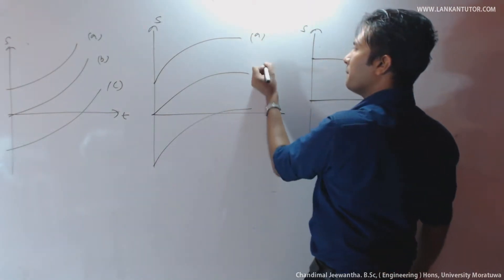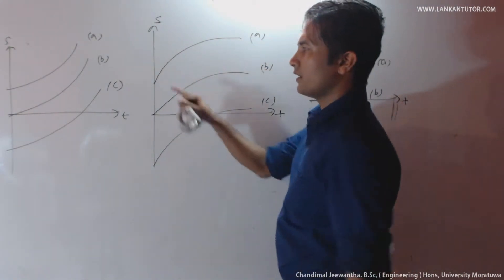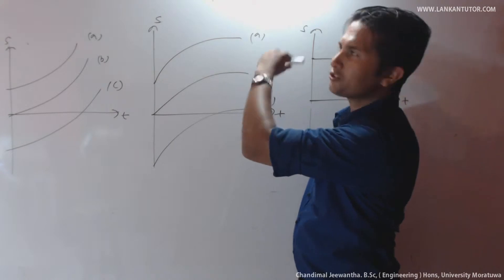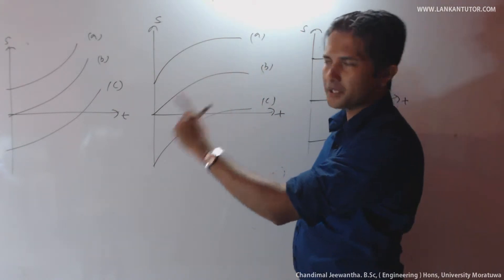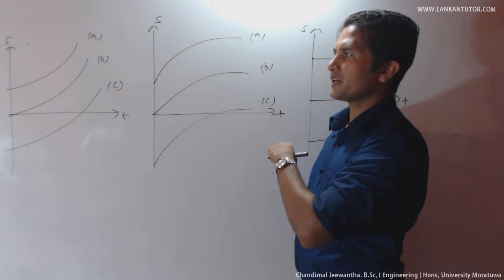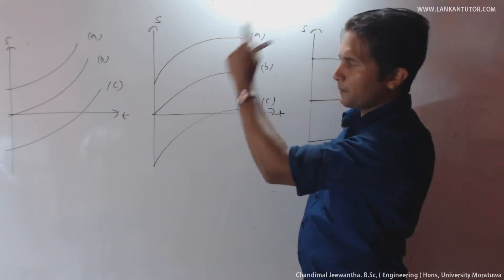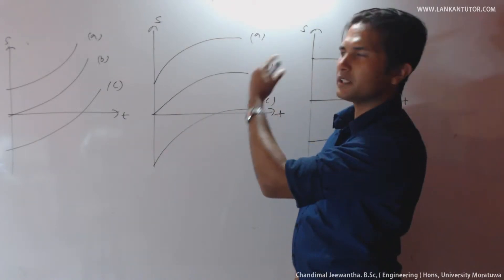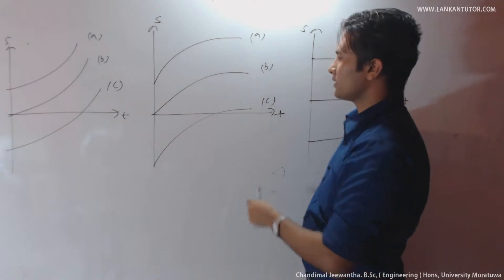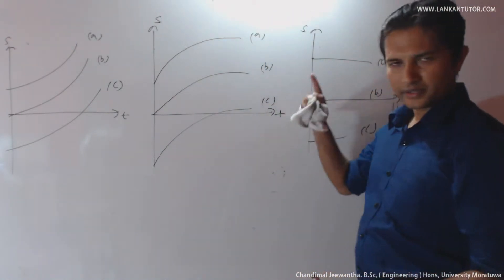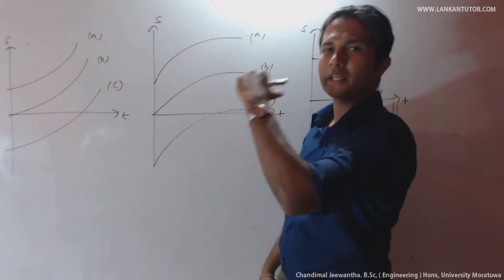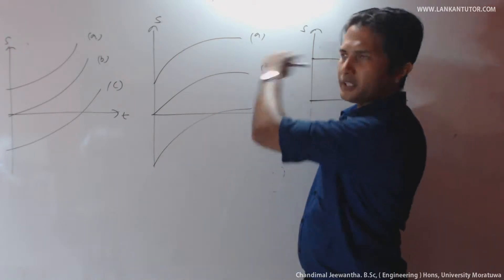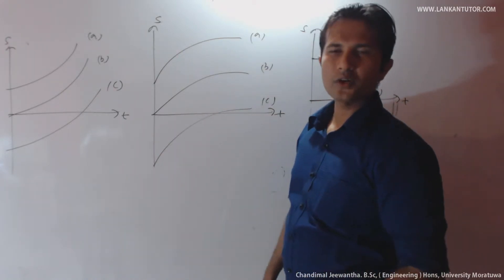Similarly, simple A, B and C for retardation towards positive direction. Considering simple A: starts with positive displacement, moves towards the positive direction but with uniform retardation. Considering simple B: starts from the origin, moves towards the positive direction with uniform retardation. Considering simple C: starts from negative displacement towards the positive direction with uniform retardation.